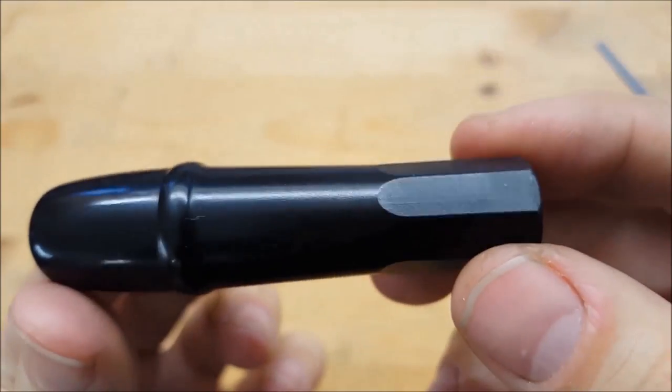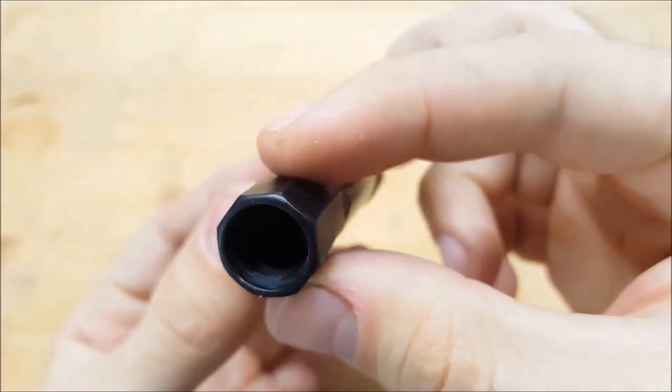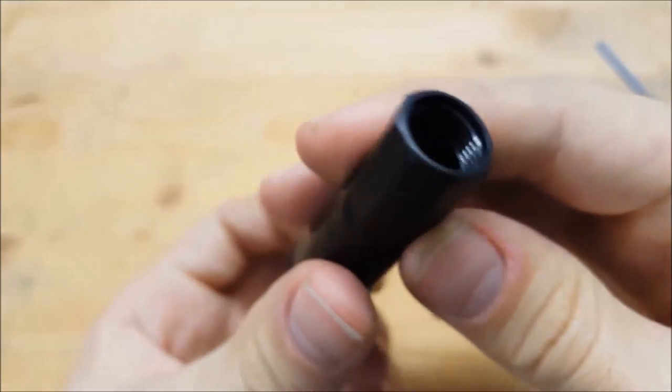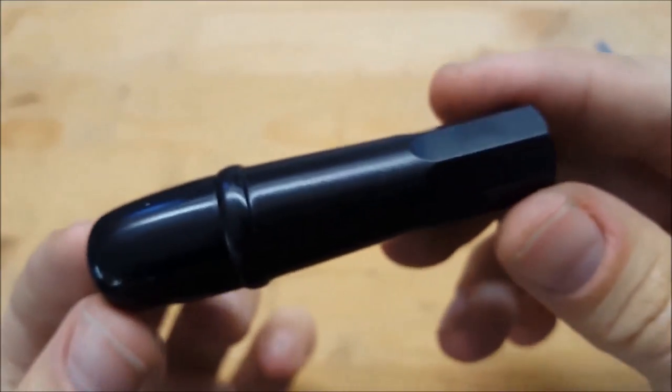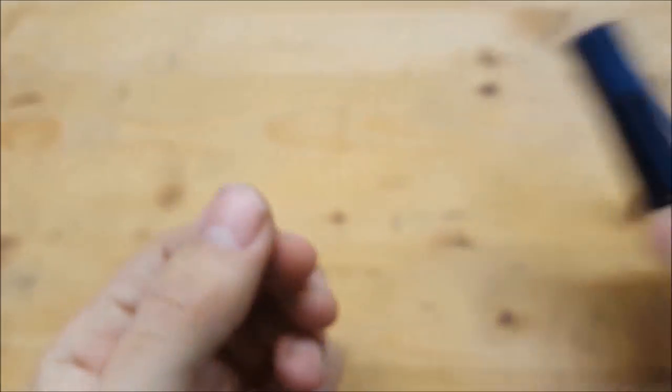To understand what that part has to do, we first look at the original handle. So there you can see that the element that we are about to make has to hold the internal thread that enables the mechanics. It also has to offer enough space to accommodate all the parts of the internal clutch.